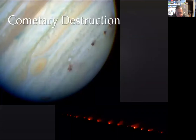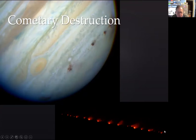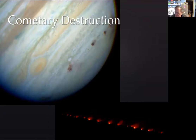Another way comets can get wiped out is total destruction by collision with a giant planet. They're quite likely to encounter one of the four giant planets and crash into it, pulled in by strong gravity. That's what happened with Comet Shoemaker-Levy 9 — you can see the impact scars on the disk of Jupiter. The comet had come too close to Jupiter on the previous pass and been torn apart into lots of little cometlets, each of which then crashed into Jupiter next time around.